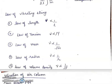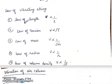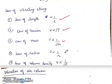Laws of frequency: frequency is inversely proportional to length. Law of tension: V ∝ √T. Law of mass: ν ∝ 1/√M. Law of radius: ν is inversely proportional to radius. Law of volume density: ν ∝ 1/√ρ.